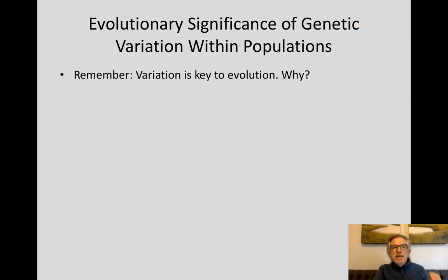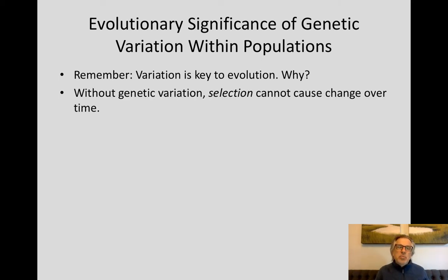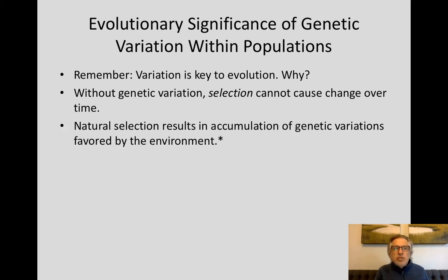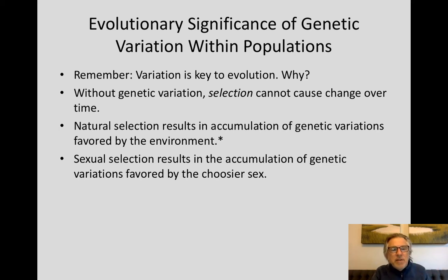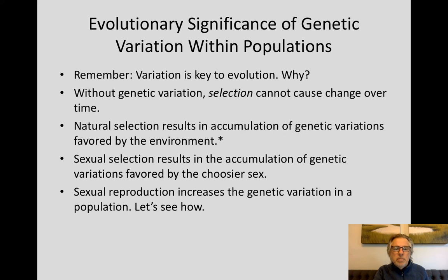Variation, as you may remember, is the key to evolution — particularly genetic variation. Without genetic variation, selection cannot cause change over time. Natural selection results in the accumulation of genetic variations favored by the environment, and sexual selection results in the accumulation of genetic variations favored by the choosier sex. Unless those variations are genetic, there can be no cumulative change in the population. Sexual reproduction actually increases the genetic variation in a population.